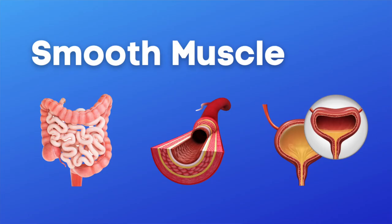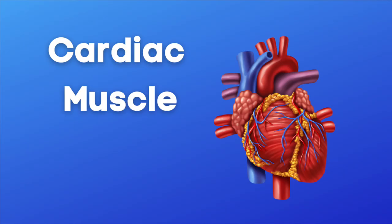Smooth muscle controls most of our bodily functions — things like digestion, blood flow, and urination. Smooth muscles are not under our voluntary control. Our brain controls them and controls all of these functions without us even realizing that it's happening.